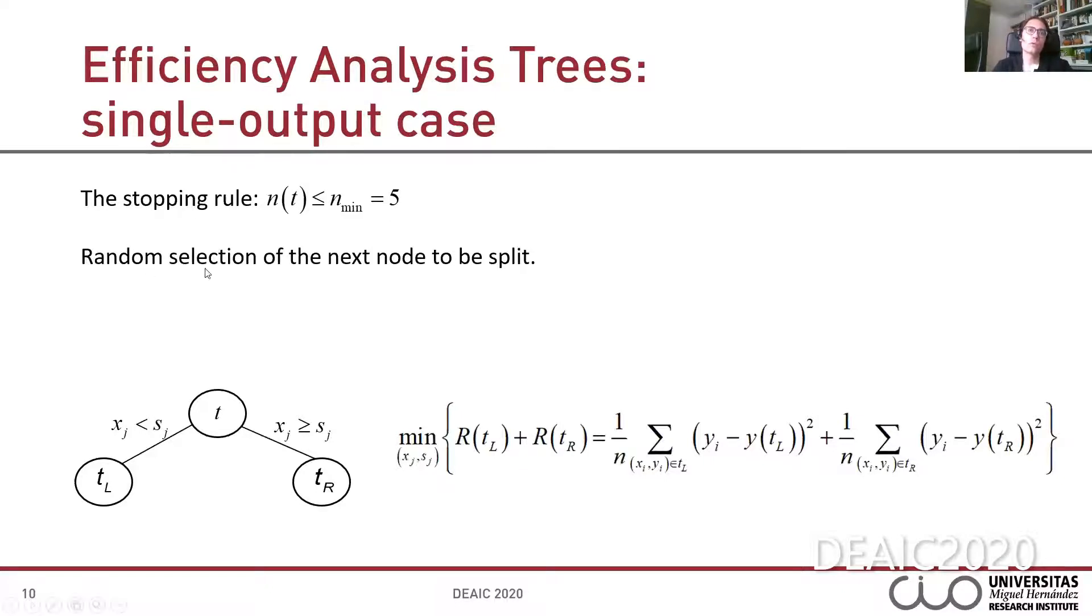Additionally, in our approach, the way of selecting the next node to be split in the algorithm will be random. Moreover, like in the standard CART, in our algorithm, a parent node t is split into two child nodes, t left and t right, by selecting an input variable xj and a threshold for this variable sj that minimizes the sum of the mean square error of the two child nodes. The formula that appears on the right - ytl and ytr are the estimations of the output for the data in node tl and node tr respectively. The data belonging to the left child node is the data that satisfies this condition, while the data that belongs to the right child node is the data that meets this other condition.